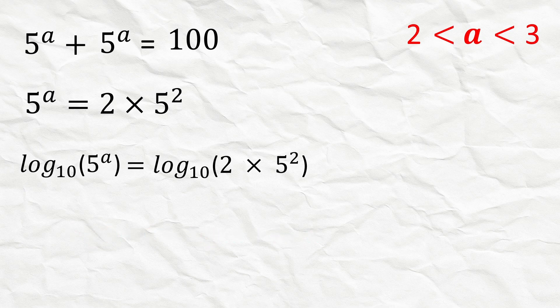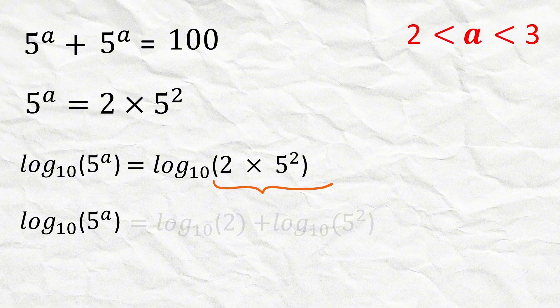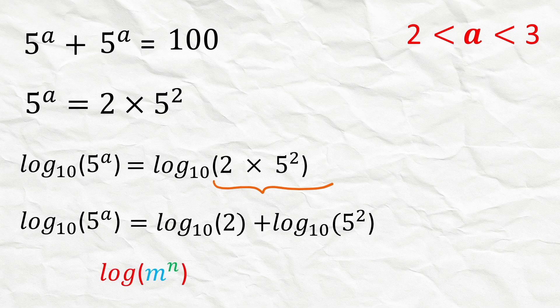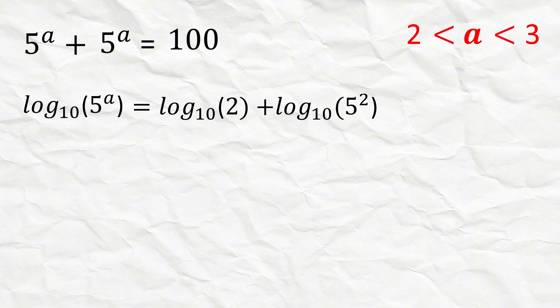So we can rewrite the right side as log 2 plus log 5 squared. Next we will use this log rule where log m raised to n equals n times log m, so the left hand side becomes a times log 5.